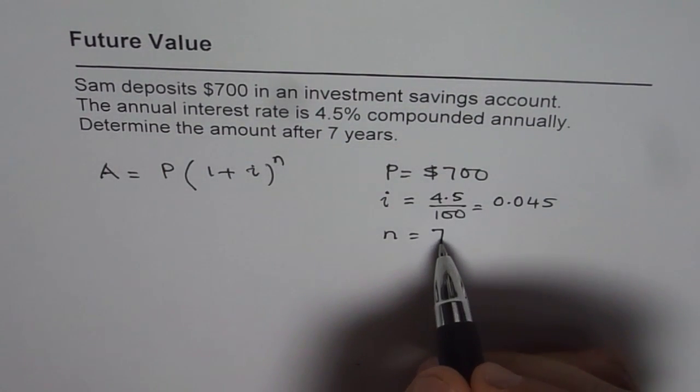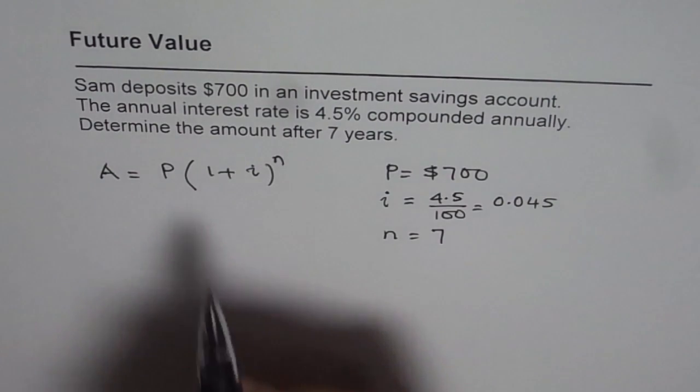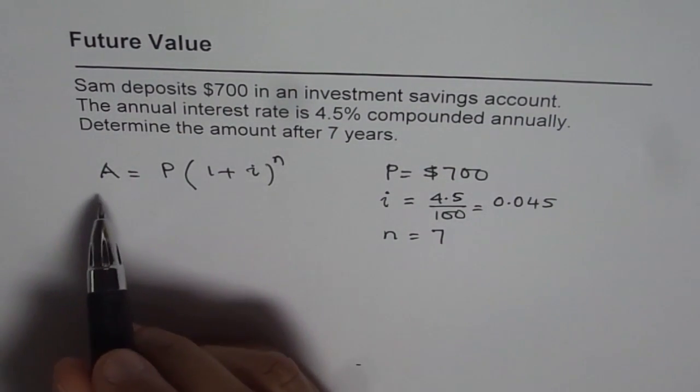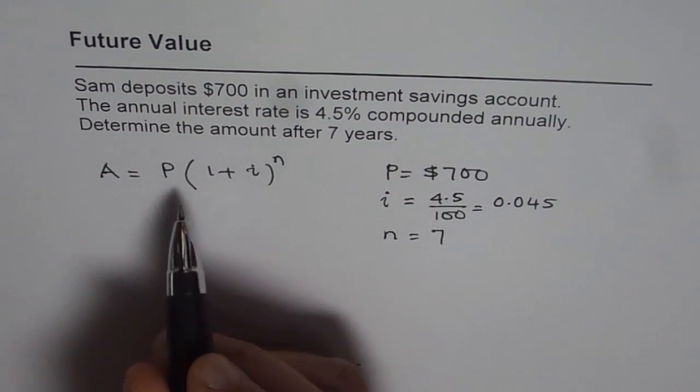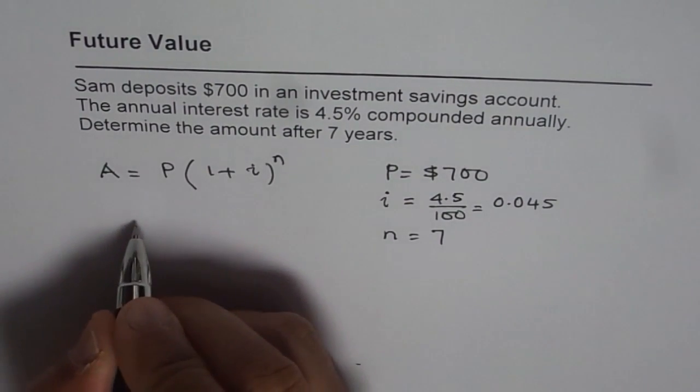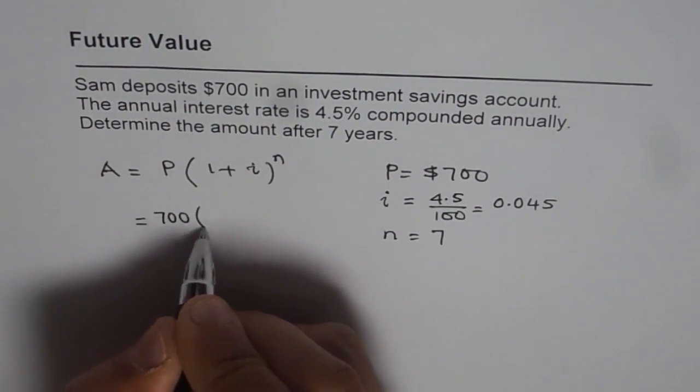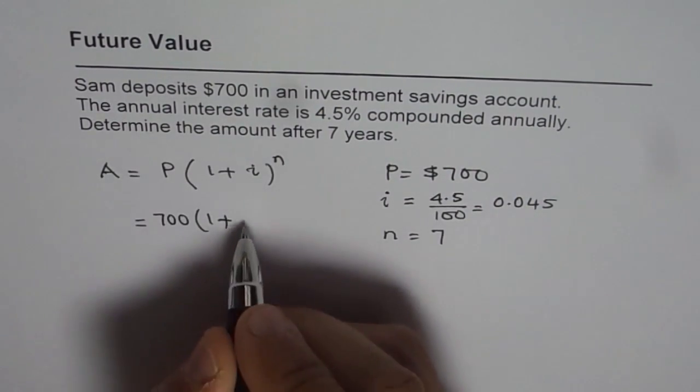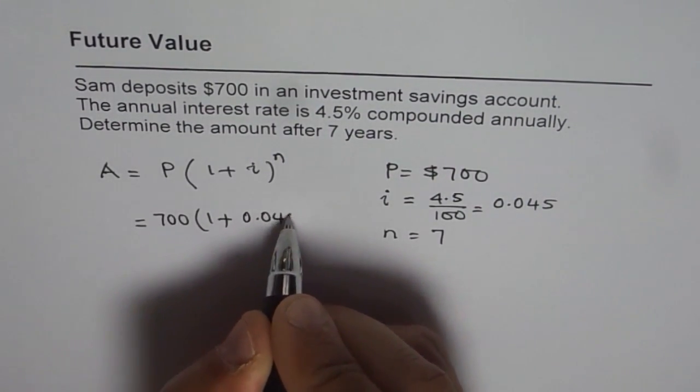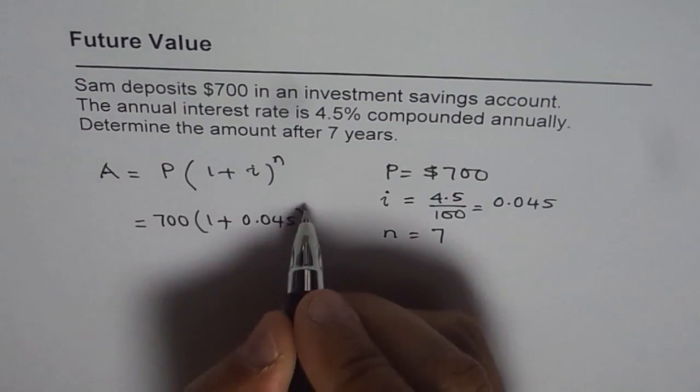Now we can place these values. Substitute these values in the formula and find A amount which is the future value. So we get A is equal to 700 times 1 plus 0.045 to the power of 7.